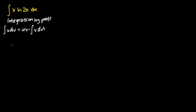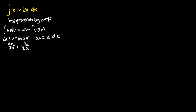For this particular problem, we let u be equals to ln 2x, and dv be equals to x dx. To find my du, I differentiate u with respect to x. This gives me 2 over 2x. Multiplying both sides by dx, I get du equals 1 over x dx.